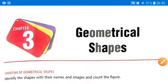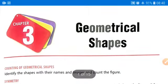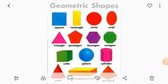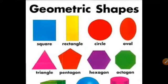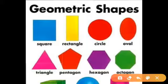Hello and welcome back to our vmate classes. Today we are going to learn geometrical shapes. So what are geometrical shapes? You can see here square, rectangle, circle, oval, triangle, pentagon, hexagon, and octagon shapes. All of these are called geometrical shapes.